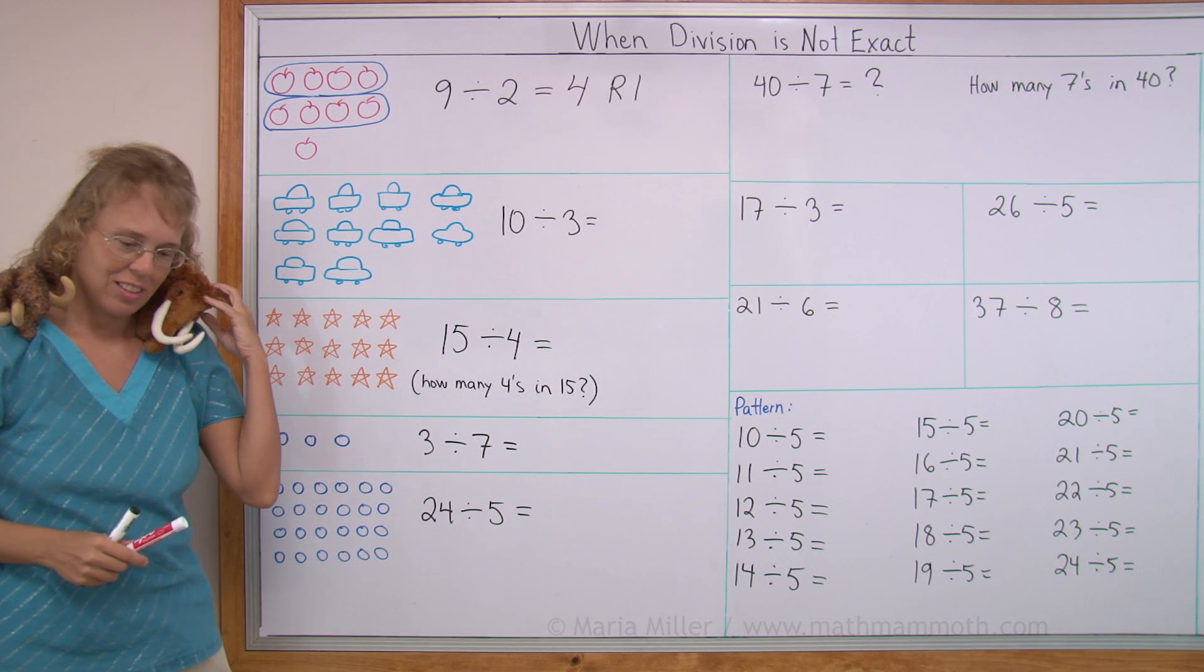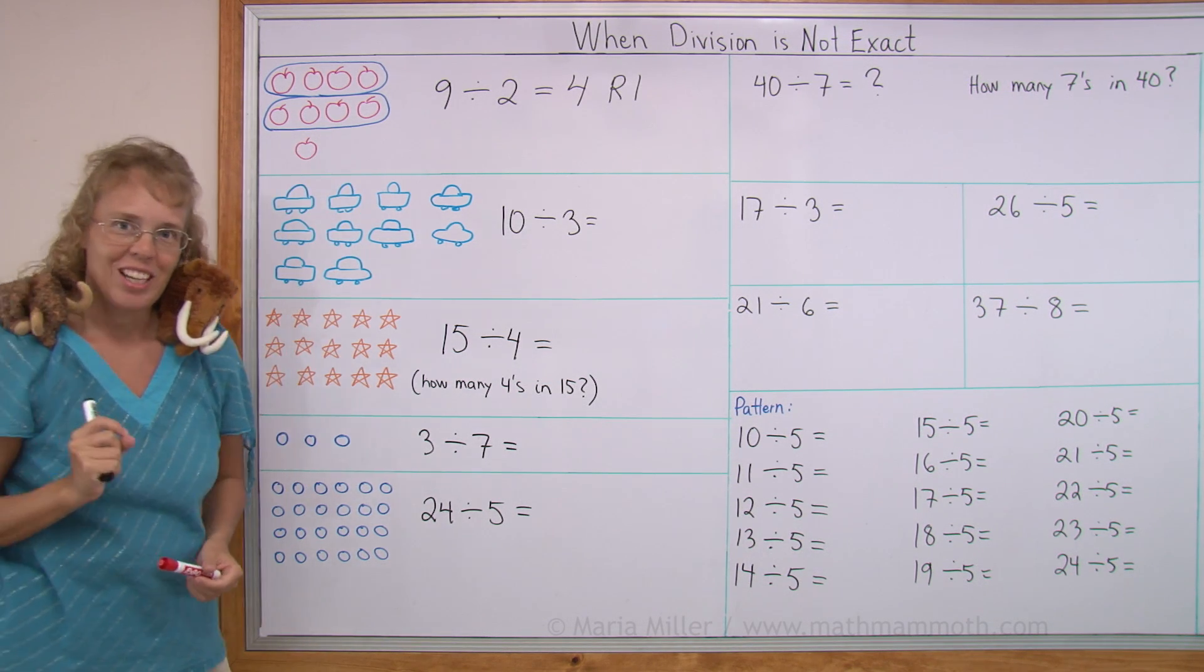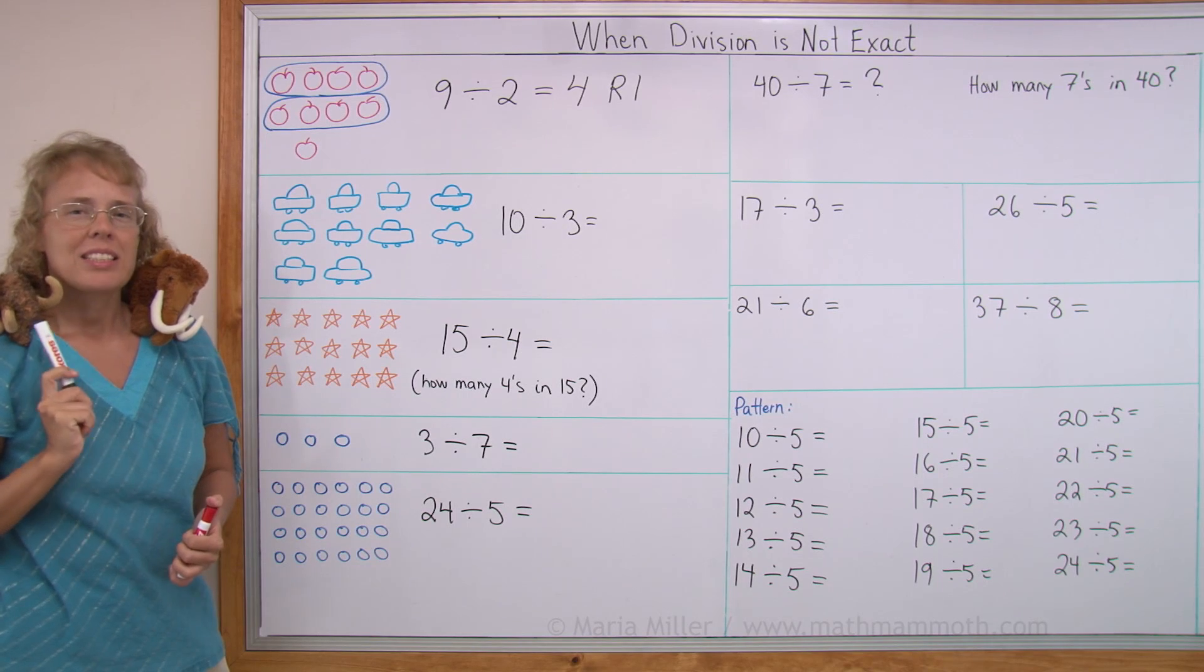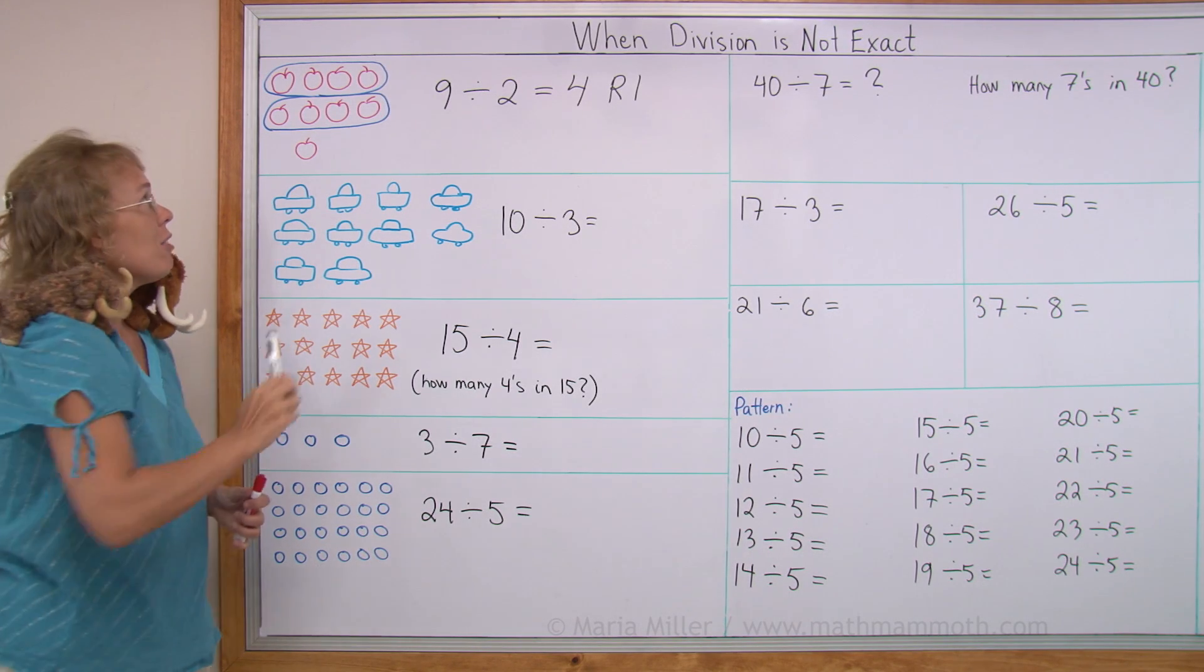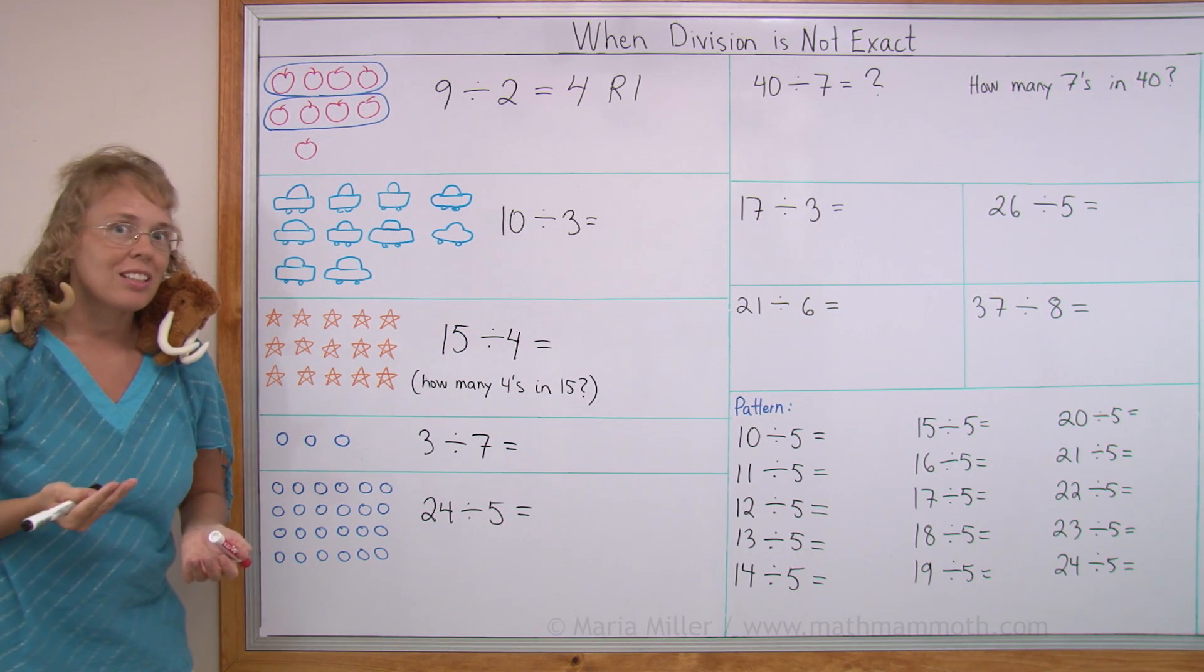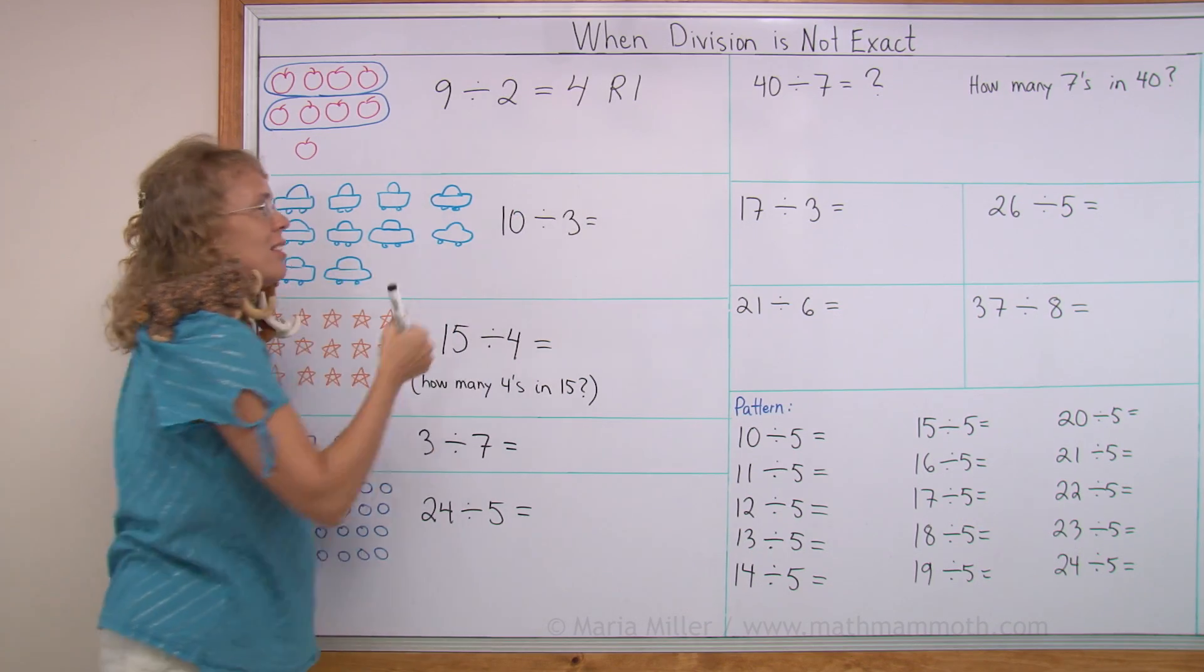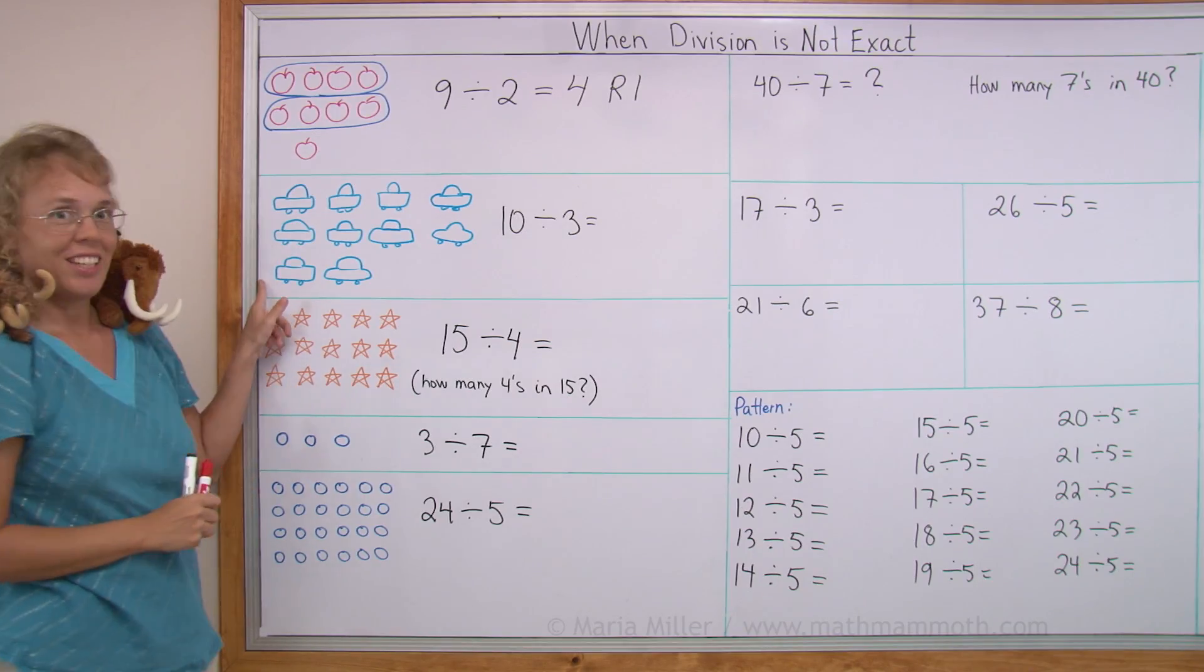Mathi is saying what if we cut this apple in the middle, right? You could do that and then you would say that each mammoth gets four and a half apples. But sometimes you cannot divide things in the middle. For example, if these were nine toy cars, you wouldn't want to do that. And so then each mammoth would get four toy cars. Because there would be one left over, one remainder, such as we have here.